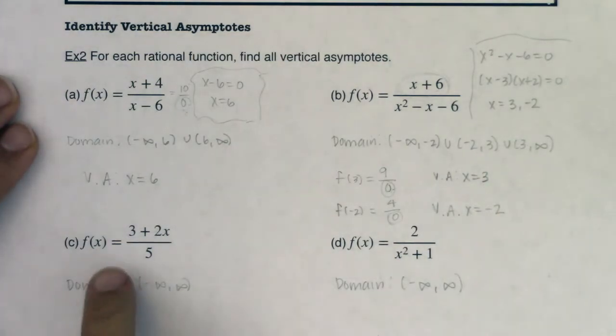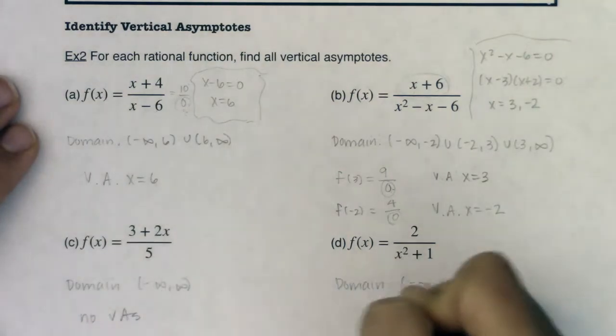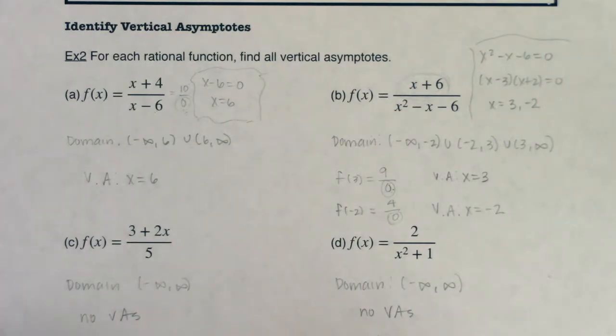All right, now for c and d, my domain was all real numbers. My denominator never zeroed out, so here I have no vertical asymptotes, and here I also have no vertical asymptotes, and I don't want you to think that for any problem you have to have a certain number of vertical asymptotes. It just depends on the equation.